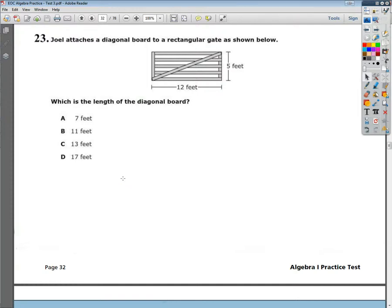Welcome, this is the end of course Algebra 1 practice test number 3, question number 23. Joel attaches a diagonal board to a rectangular gate as shown below. What is the length of the diagonal board?